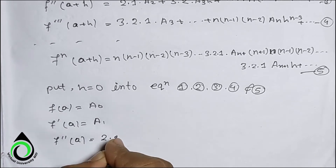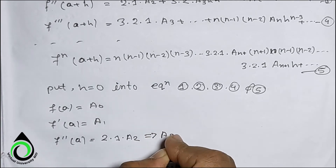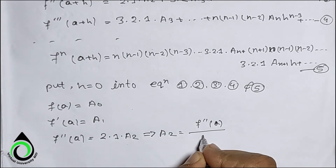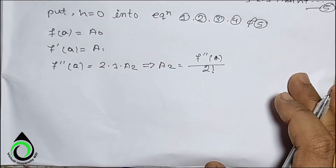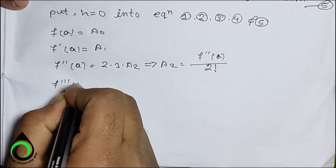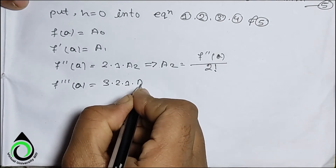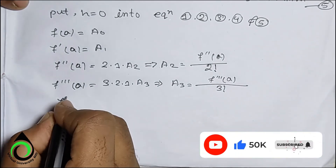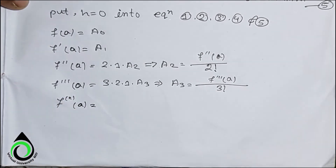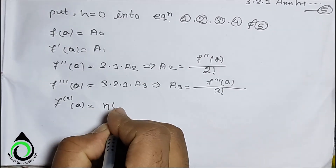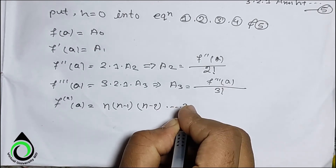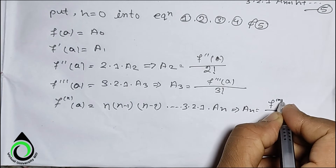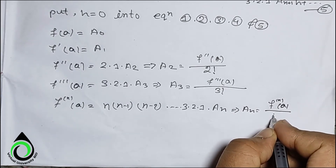From the results: 2·1·a₂ = f''(a), so a₂ = f''(a) / 2 factorial. Then 3·2·1·a₃ = f'''(a), so a₃ = f'''(a) / 3 factorial. And in general: f⁽ⁿ⁾(a) = n·(n−1)·(n−2)·...·3·2·1·aₙ, so aₙ = f⁽ⁿ⁾(a) / n factorial.